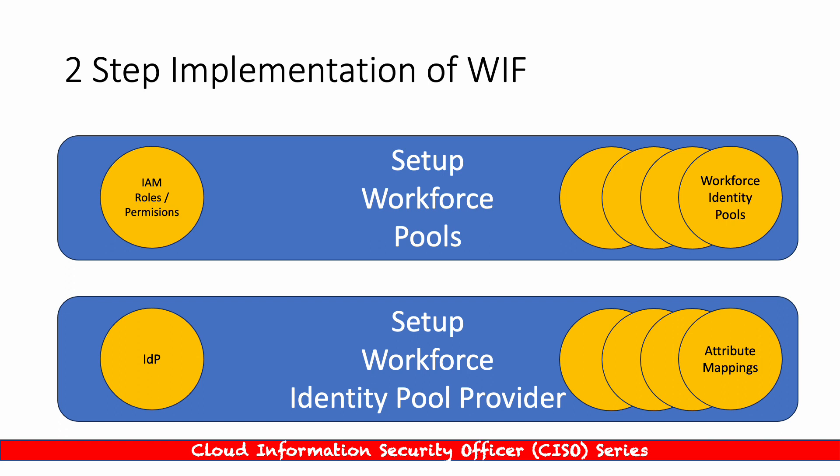Now let's look at a quick view of how to implement this. It's really two steps. First, we set up the workforce pools — multiple workforce identity pools can be created — and we attach IAM roles and permissions to these pools. The second phase is setting up the identity pool provider, the IDP, focusing on attribute mappings. Again, it doesn't have to be one attribute mapping; it can be multiple attribute mappings. That concludes today's presentation.